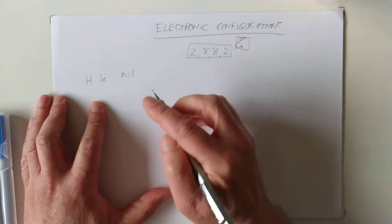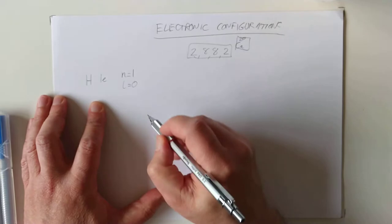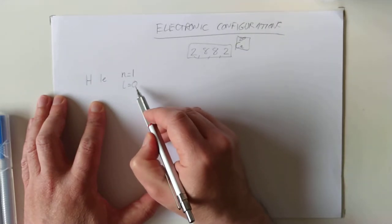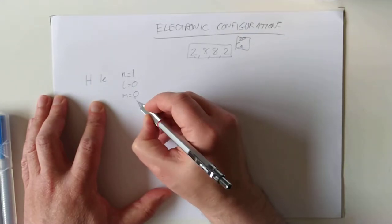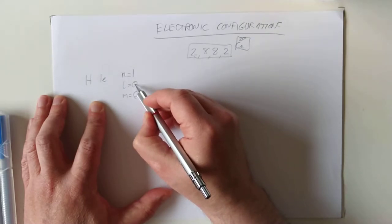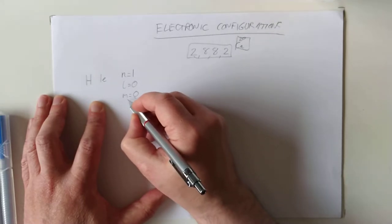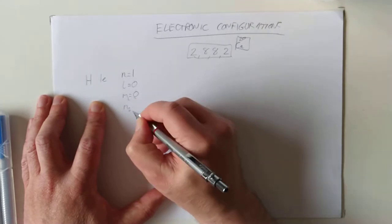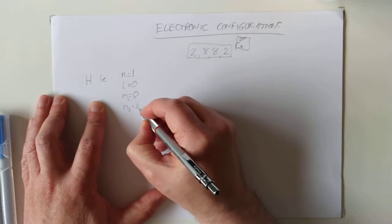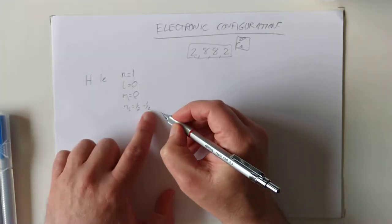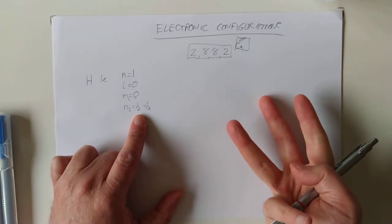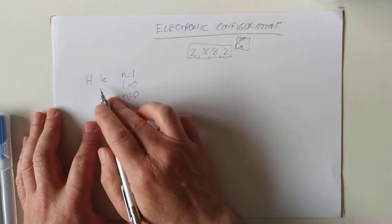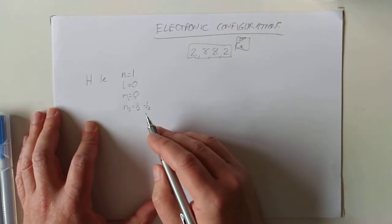If you cast your minds back to the last video, this means l has got to be 0. This tells us the energy level; this tells us which type of orbital we're dealing with. ml, which has got to be 0, so that's 1 value — meaning you can fit one pair of electrons into this type of orbital. And ms can either be plus ½ or minus ½. The reason for this will hopefully become clear today — it's one of our three rules that you're required to know. So if we have hydrogen, we've only got one electron — that's it, game over.